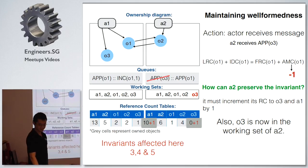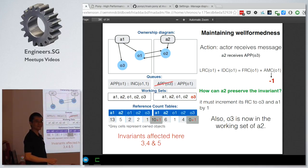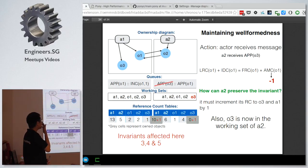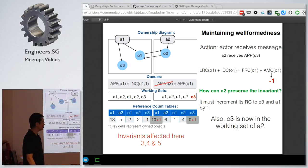Does Pony allow higher-order messages, like sending behaviors? Yes — you can send lambdas. It's quite common to send a lambda as a message, like a callback: after you do something, call that thing. So that's possible.